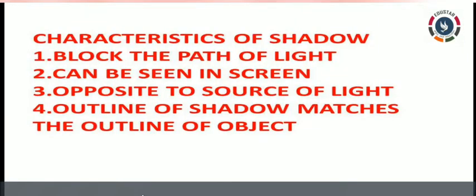Now I am going to explain the characteristics of shadow. A shadow forms when you block the path of light. Shadows can be seen only on a screen — it needs to have a screen. For example, the ground can act as a screen, walls of a room can act as a screen, and buildings or other surfaces can also be used as a screen.